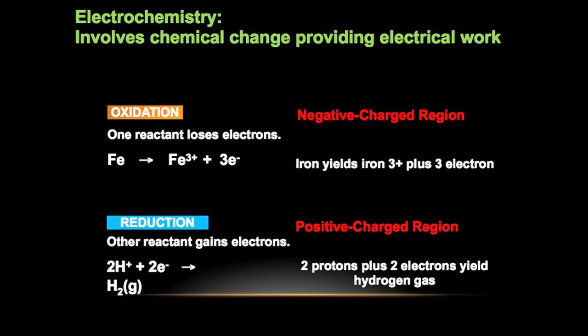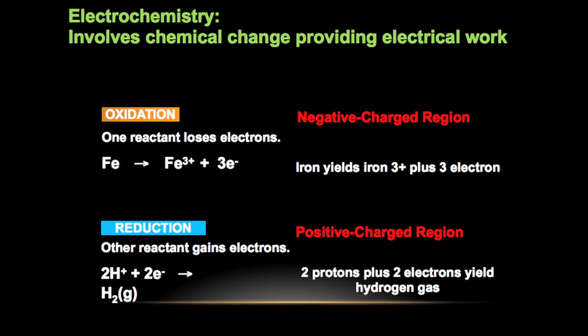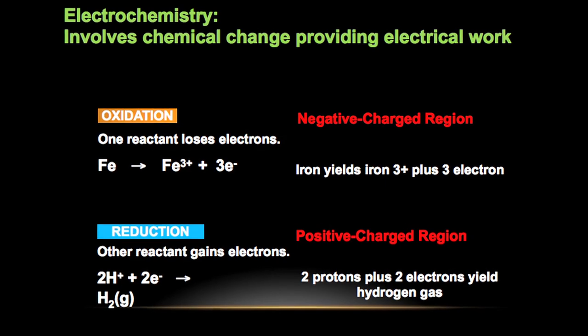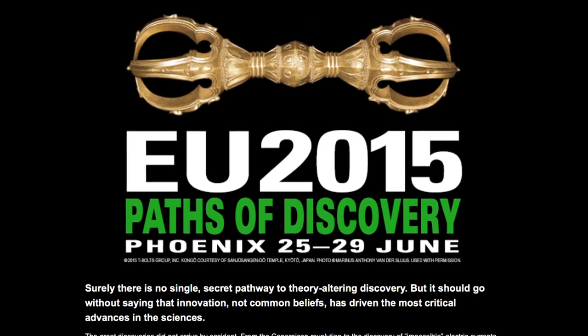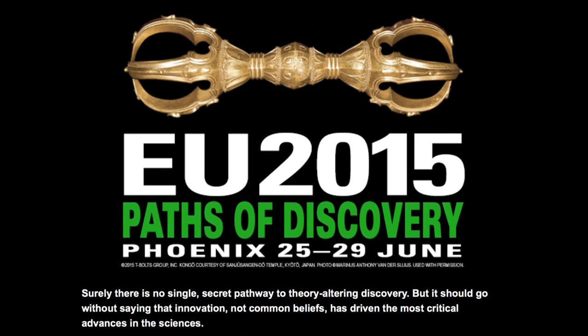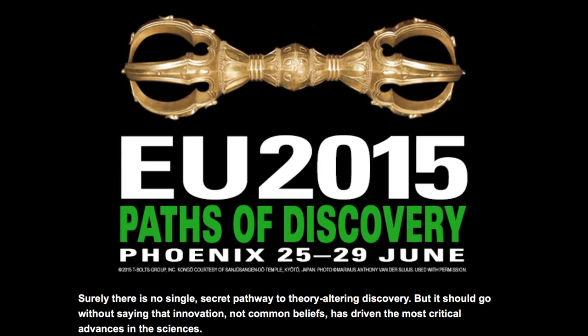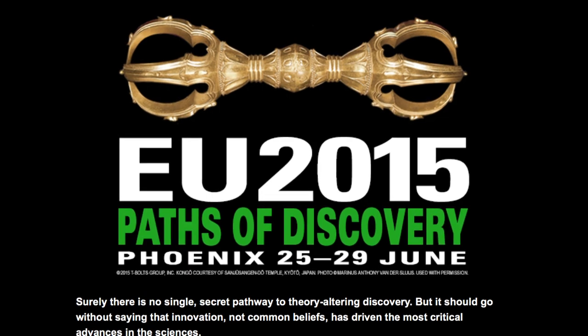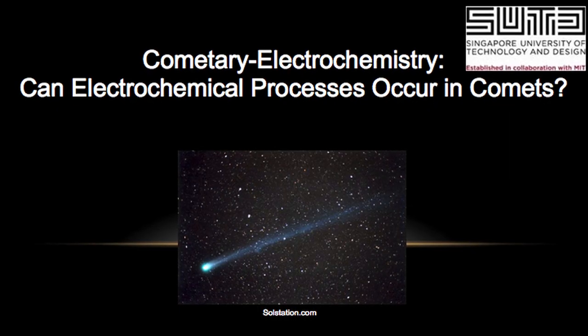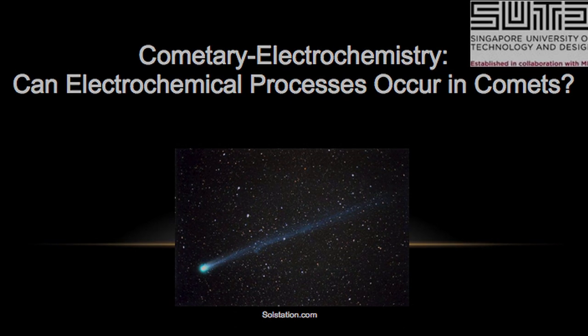Such was the case with the comet 67P, whose apparent water output, as well as the production of an amazing abundance of rich molecules, was first detected while still hundreds of millions of kilometers from the Sun, and countless other enduring puzzles abound. We ask the question, can the science of electrochemistry provide the answer to many comet mysteries? Dr. Franklin Anariba, a specialist in electrochemistry, was a featured speaker at the Thunderbolts Project's international conference, The Tipping Point, in 2013. Dr. Anariba is also scheduled to speak at the forthcoming 2015 conference, Paths of Discovery, taking place June 25th to 29th in Phoenix, Arizona. We now present you in full Dr. Anariba's 2013 talk, Cometary Electrochemistry.